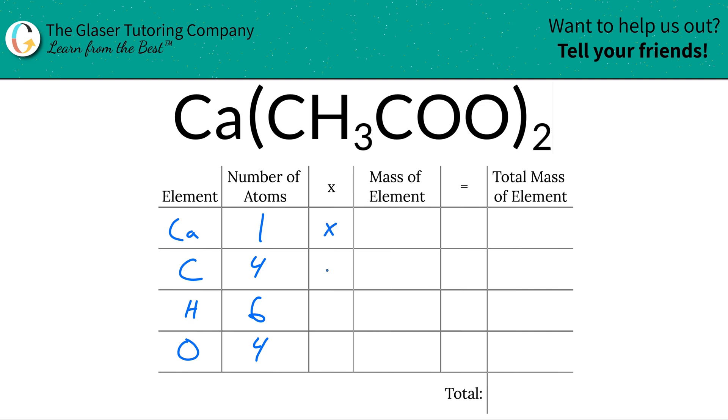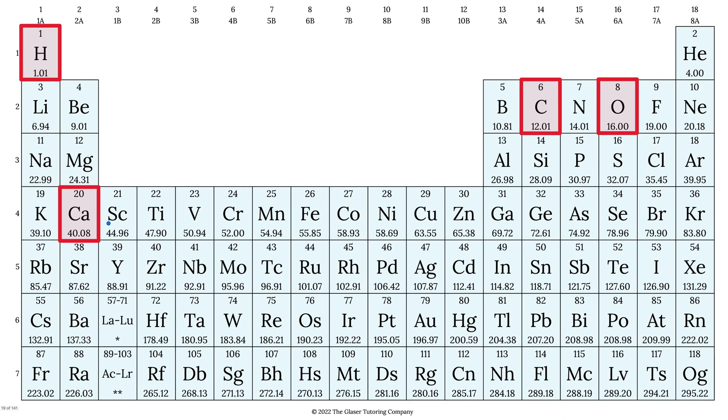Then what you're going to do is multiply those number of atoms by the mass of each particular element. And that's where the periodic table comes into play. So we've got to look these elements up. These masses for calcium is 40.08, hydrogen is 1.01, carbon is 12.01, and oxygen is 16. Those masses will represent either the molar mass in grams per mole if you're calculating molar mass, or the molecular mass in AMU if you're calculating molecular mass.